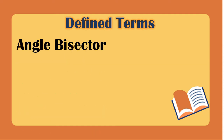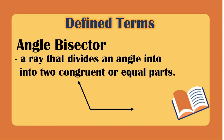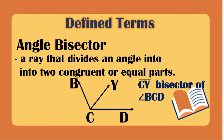An angle bisector is a ray that divides an angle into two congruent or equal parts. If we have angle BCD, ray CY is the bisector, so angle BCY is congruent to angle YCD.